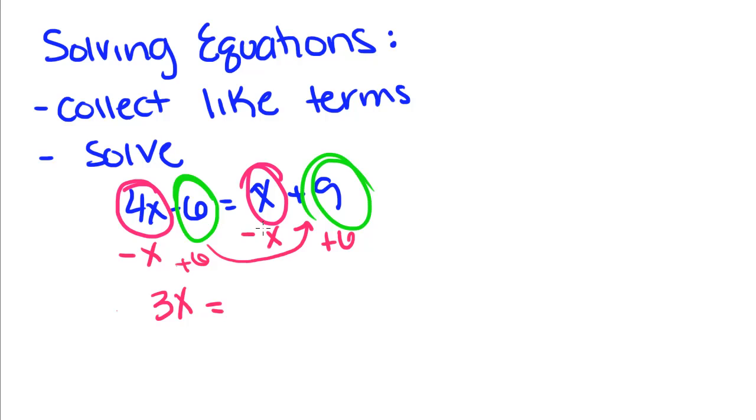So we get 3x is equal to 15. And now that we've collected our terms we're going to solve this just like any other equation, by dividing by 3 and getting x equals 5.